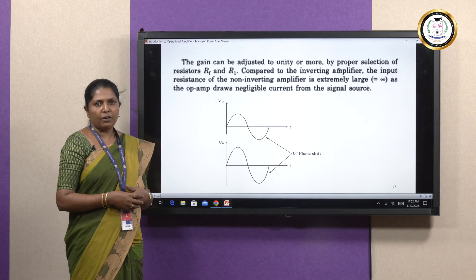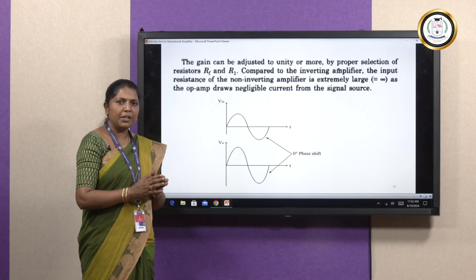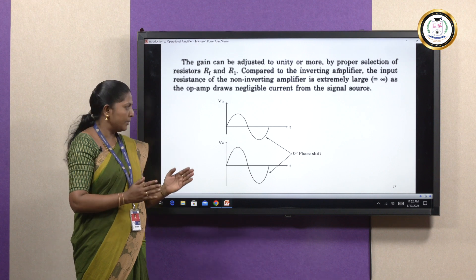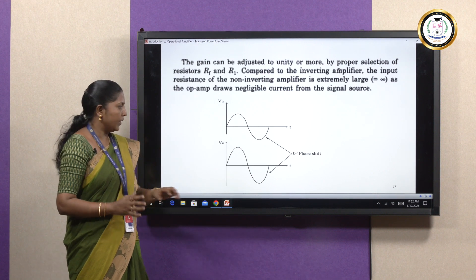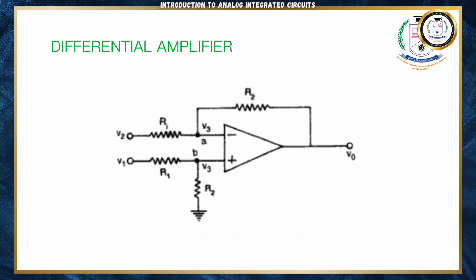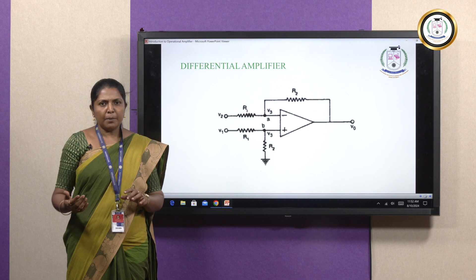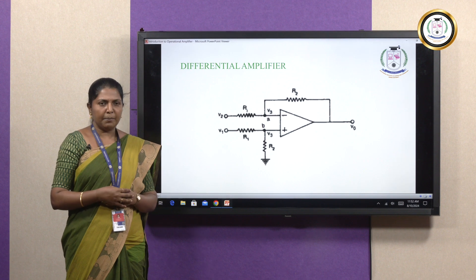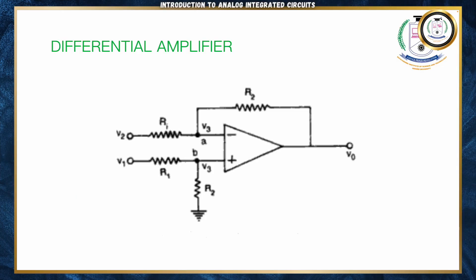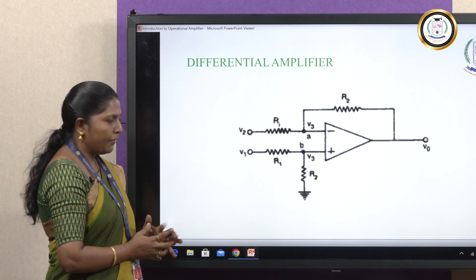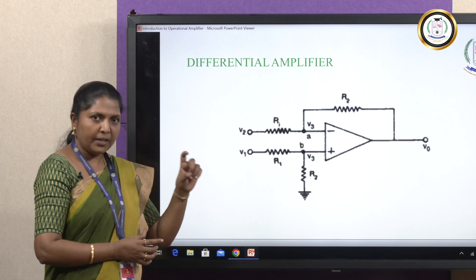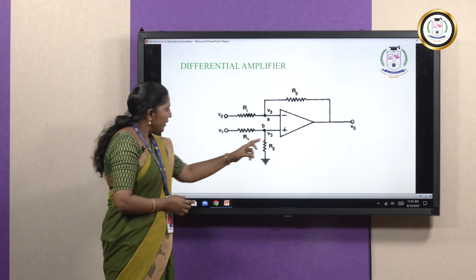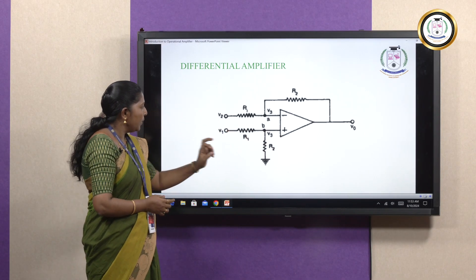This is the waveform of our non-inverting amplifier. The input is amplified, and at the same time there is no phase shift — zero phase shift is maintained between input and output voltage. Now we have seen the inverting amplifier, where input is given only to the inverting terminal, and the non-inverting amplifier, where input is given only to the non-inverting terminal. What will happen if both inputs are given at the same time? If both inputs are given simultaneously, the amplifier performs a subtraction operation.